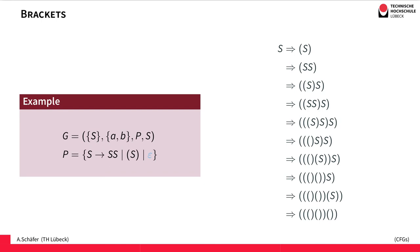Using these two kinds of rules: the first rule allows creating concatenations of bracket expressions, so you can create expressions like brackets followed by another pair of brackets. The second type is for nesting the brackets. At some point you have to stop the derivation, so we allow S to be replaced by the empty word. If you look at other texts, you might even find a shorter version of the same grammar which combines these two rules.